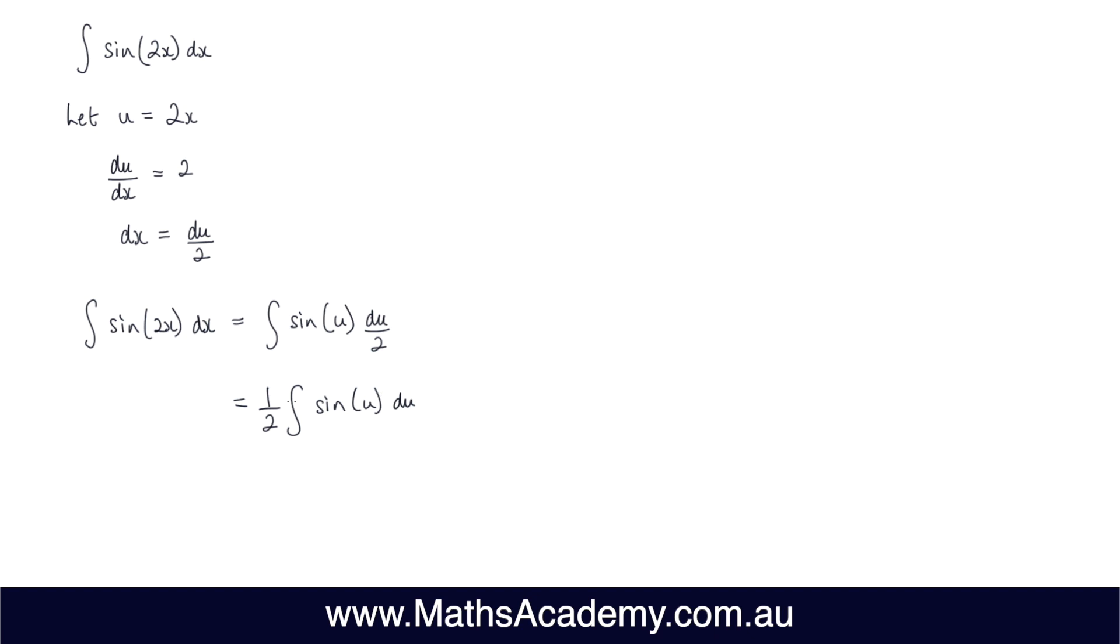Now, the next step is to perform the integral. So what we've got is the half. Now, the integral of sine of u is negative cosine of u plus the constant of integration.